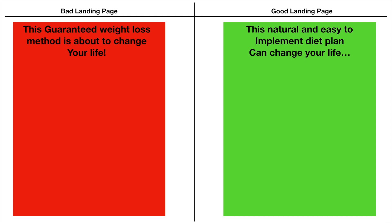The good landing page example headline would be something like: 'This natural and easy to implement diet plan can change your life.' Look at the wording — 'can change your life' versus 'is about to change your life.' 'Is about to' is guaranteed, but 'can' is not. These small changes can be the difference between getting approved on Google and getting good conversions versus not getting approved at all. Keep that in mind.